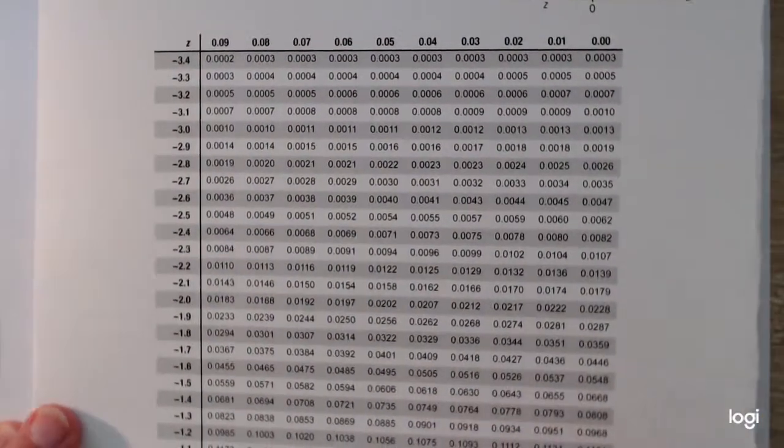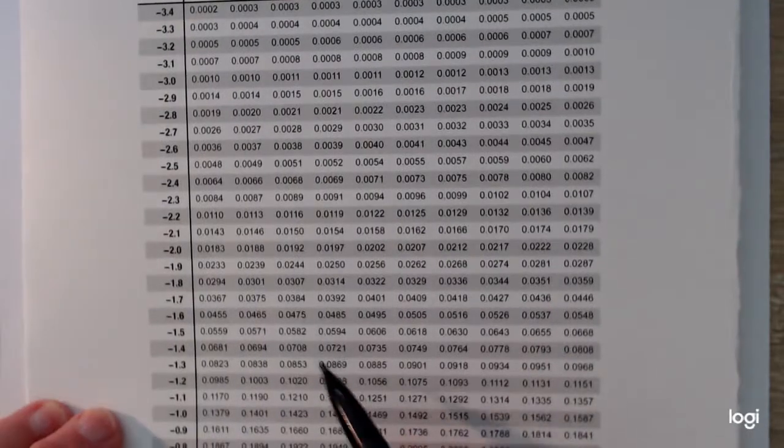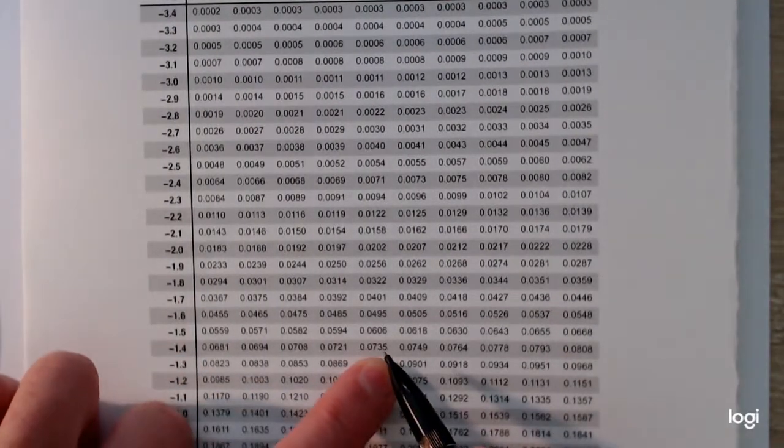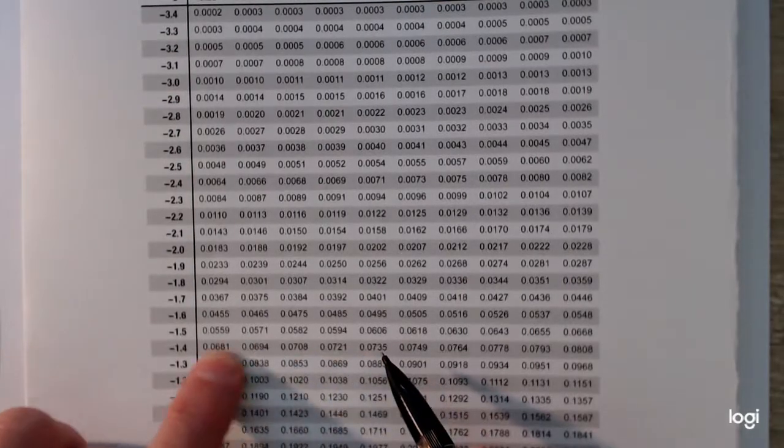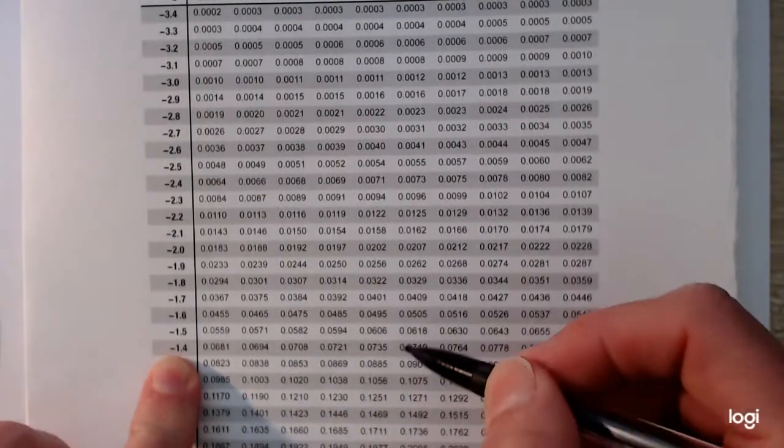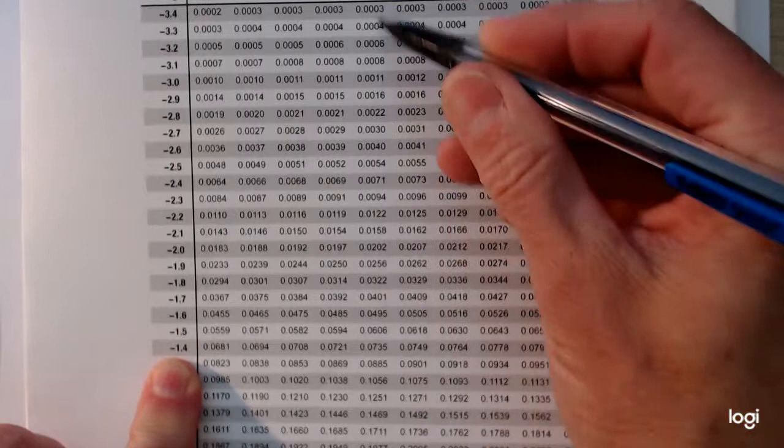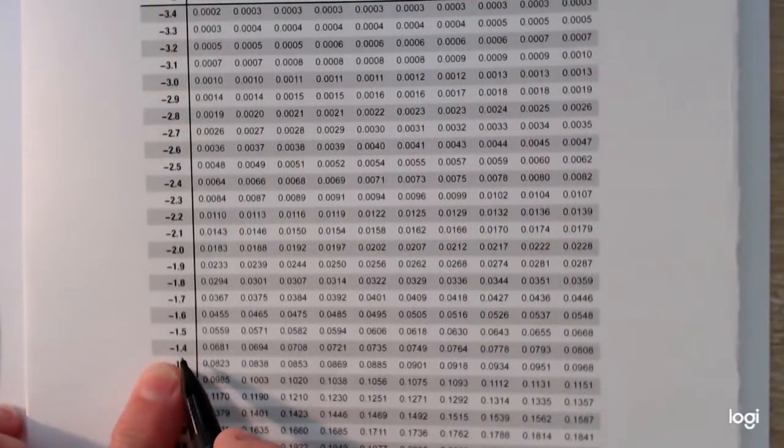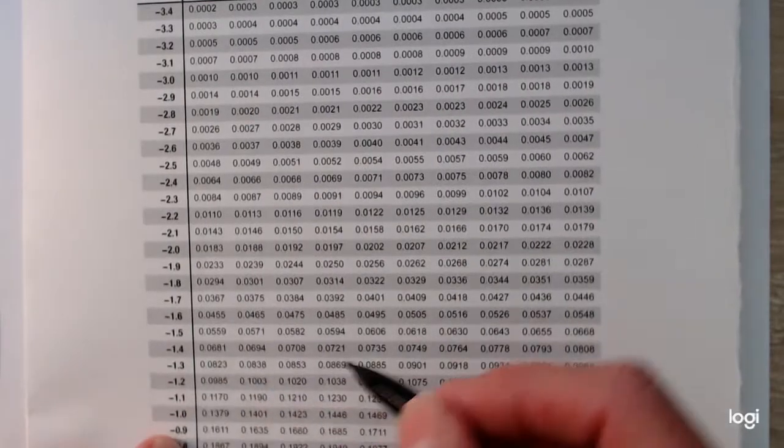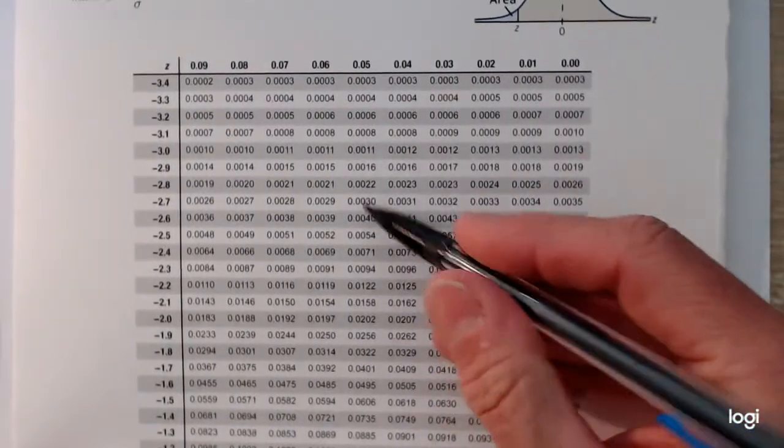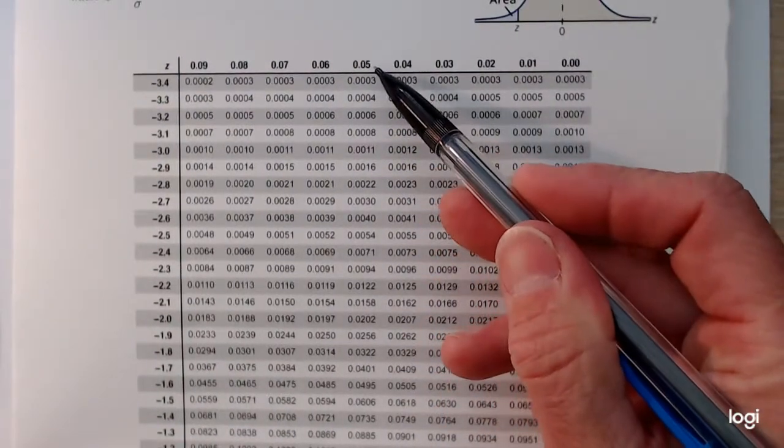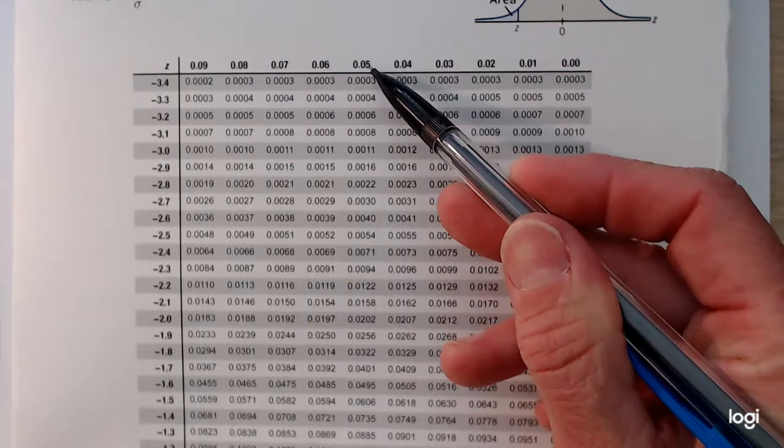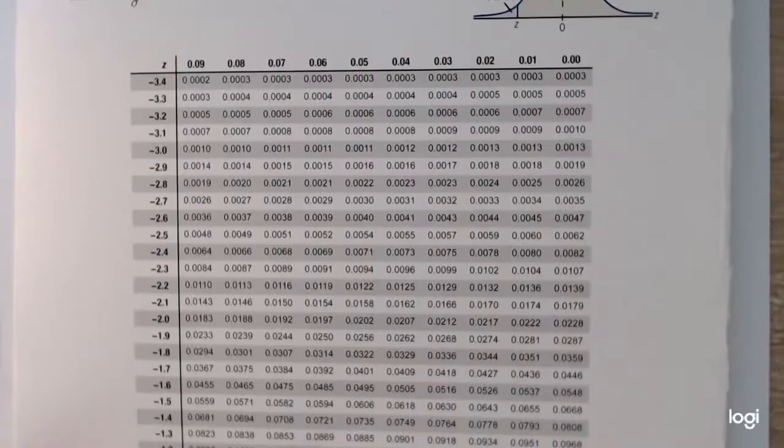So reading in the body of the table, here it is, 0.0735. So I can read to the left and then upward to get what that z-score is. So reading to the left, I'm at negative 1.4. And then reading upward, the hundredths place is 0.05. So that z-score is going to be negative 1.45.